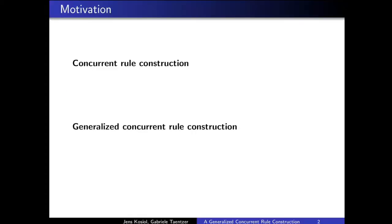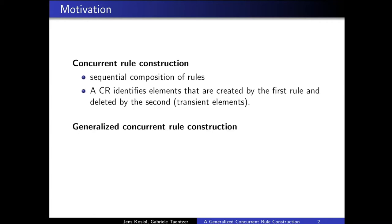Generalized concurrent rule construction. What's our motivation? If we simplify a little bit what's happening in the concurrent rule construction: the concurrent rule construction allows for the sequential composition of rules. And it takes into account transient elements. A concurrent rule identifies elements that are created by the first rule and deleted by the second.